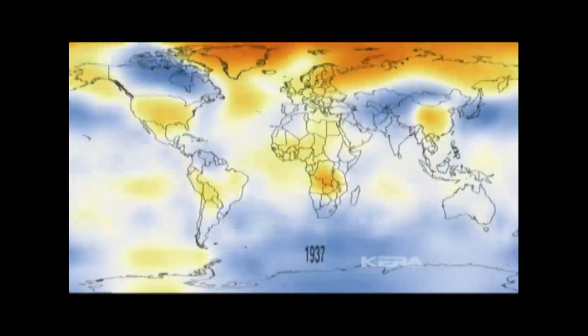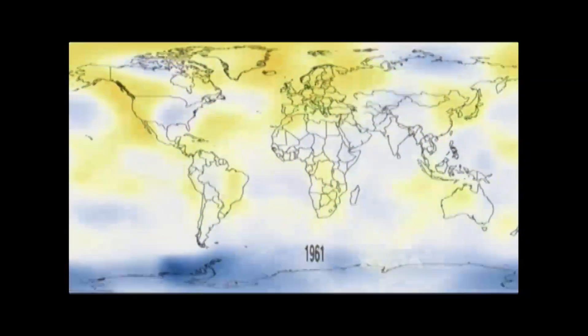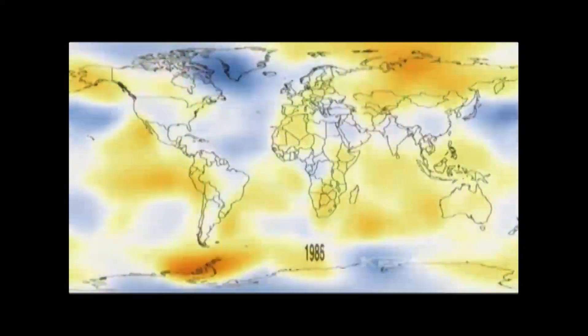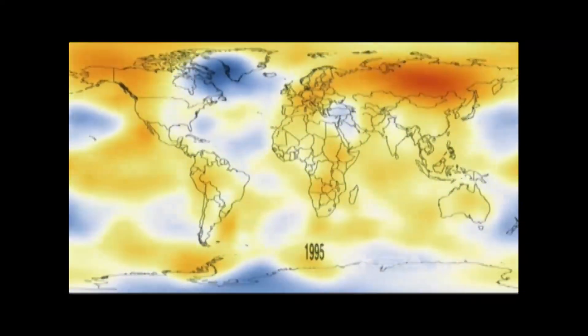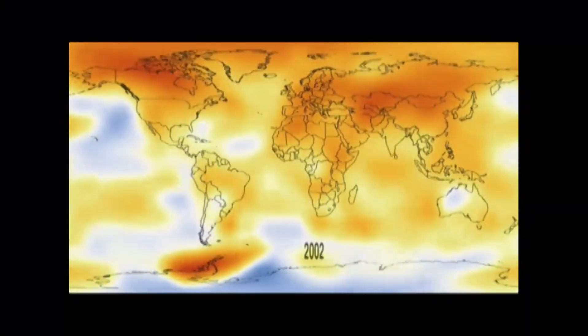That carbon, long buried, combines with oxygen in the Earth's atmosphere and acts like a blanket, trapping heat. This NASA map shows global temperatures rising over the last century.